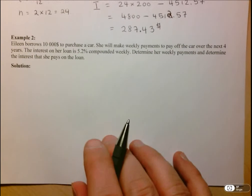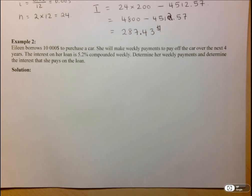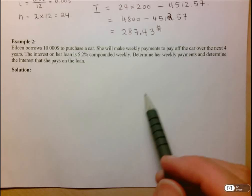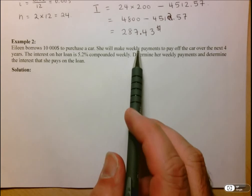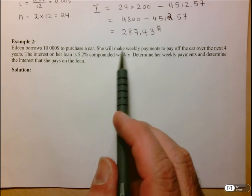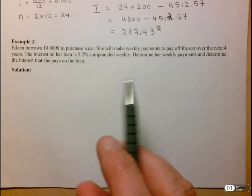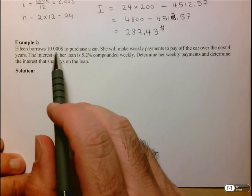Example 2: Eileen borrows $10,000 to purchase a car. This is slightly different — instead of depositing money to receive payments, she's borrowing money and will make payments to pay off the loan. She makes weekly payments over the next four years at an interest rate of 5.2% compounded weekly. We need to determine her weekly payment amount and the total interest she pays on the loan.